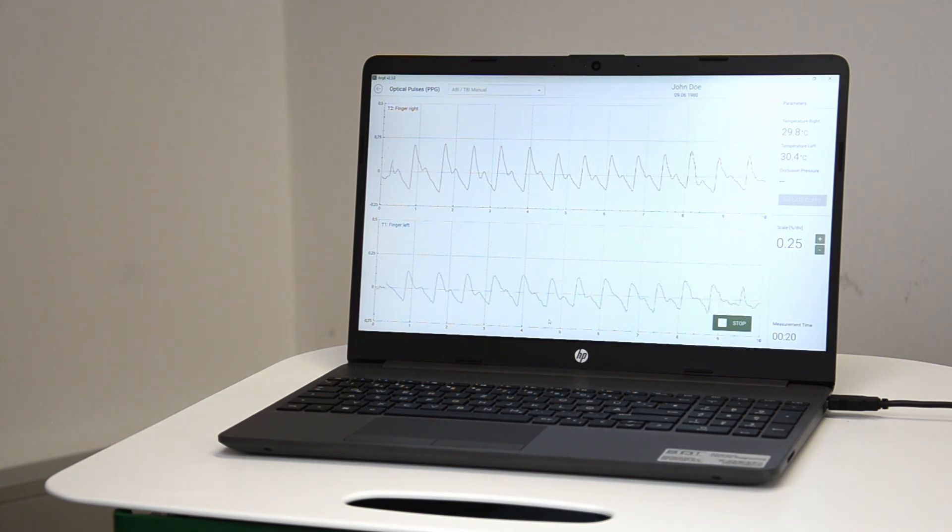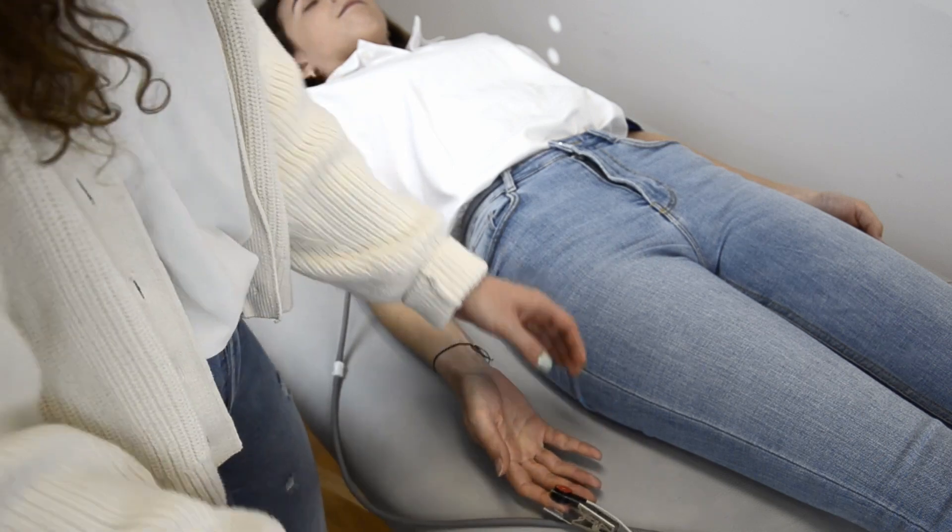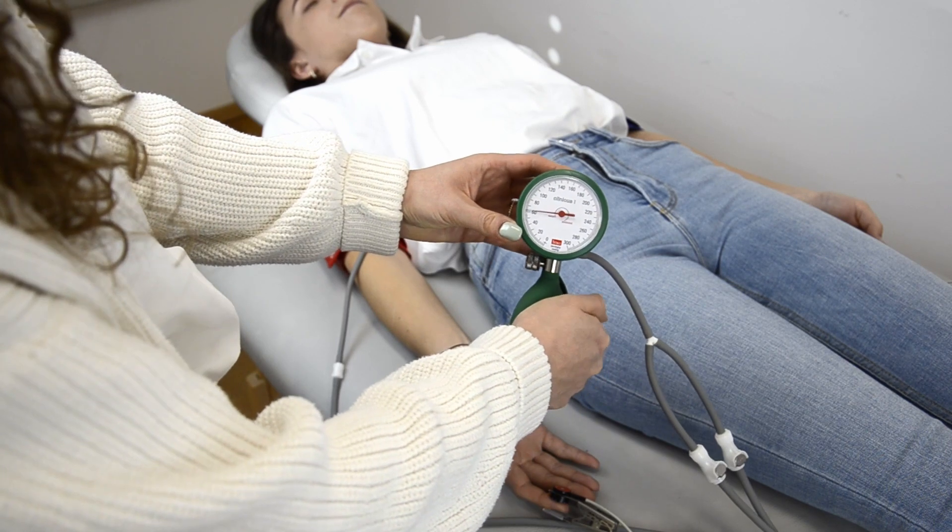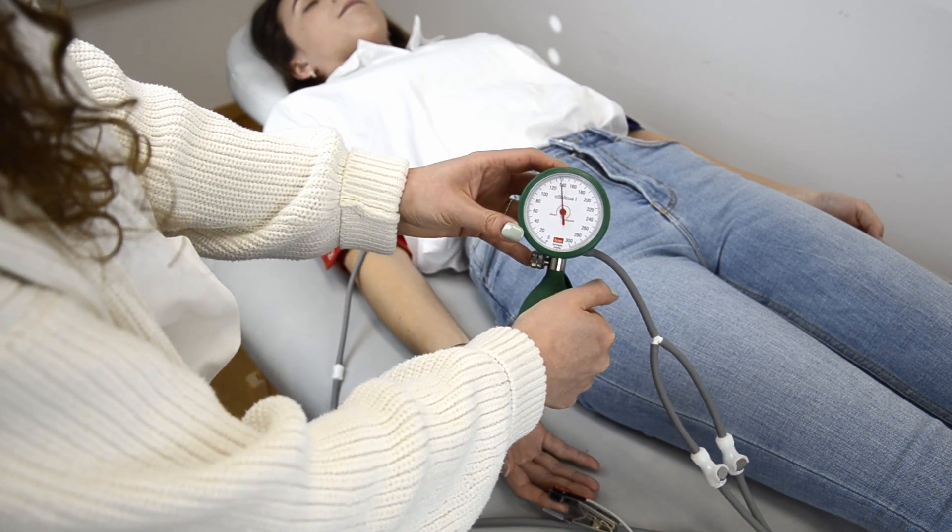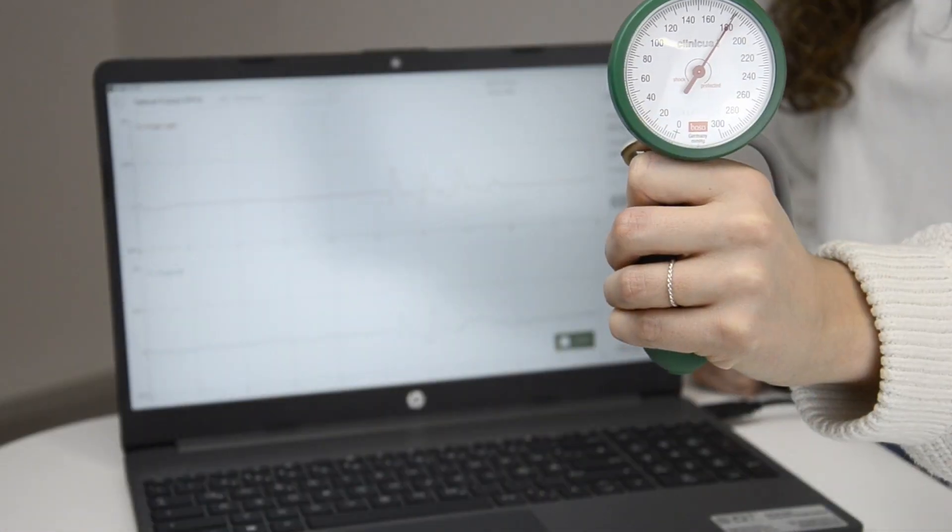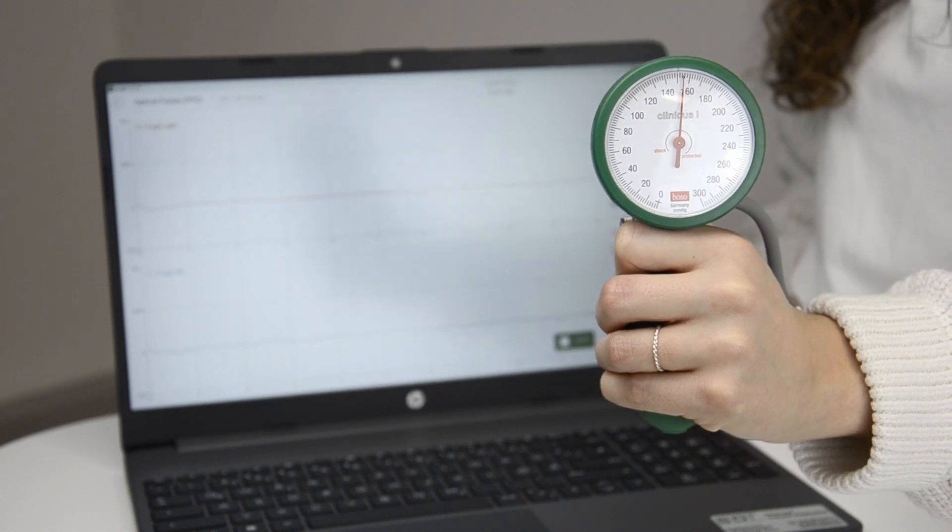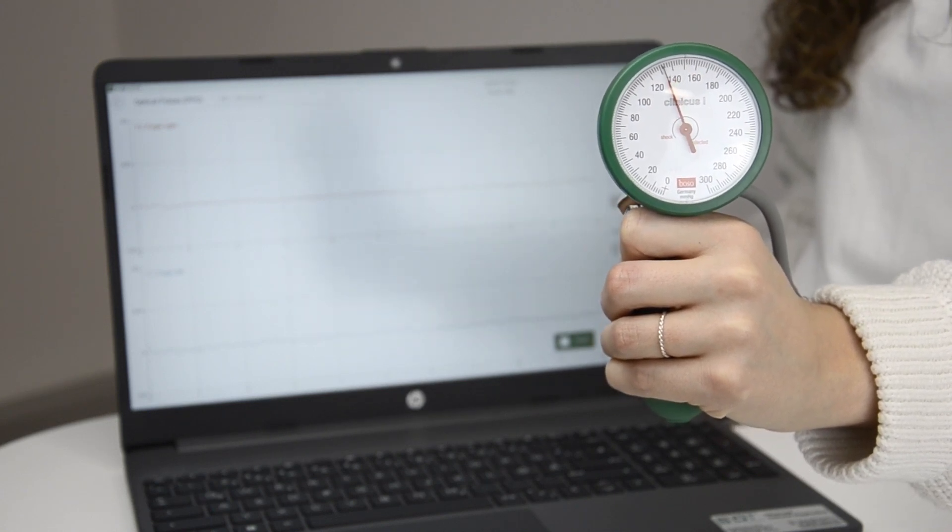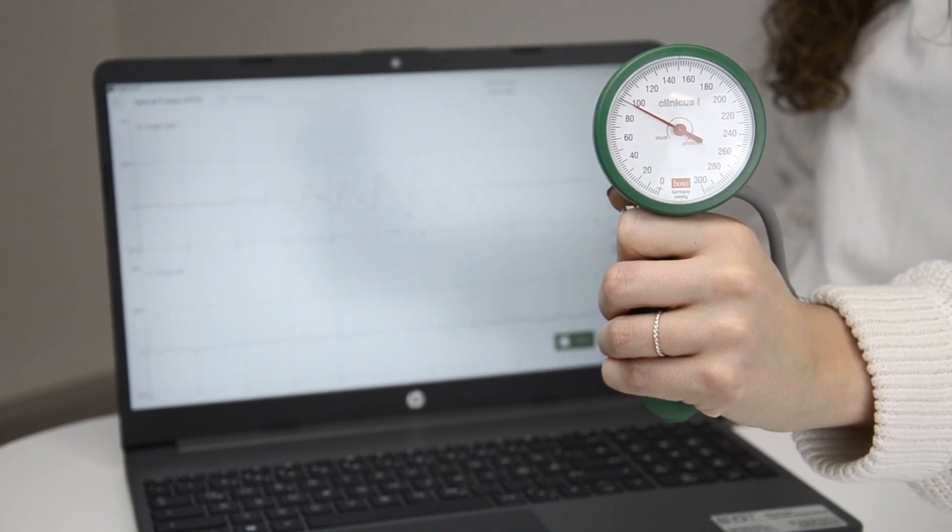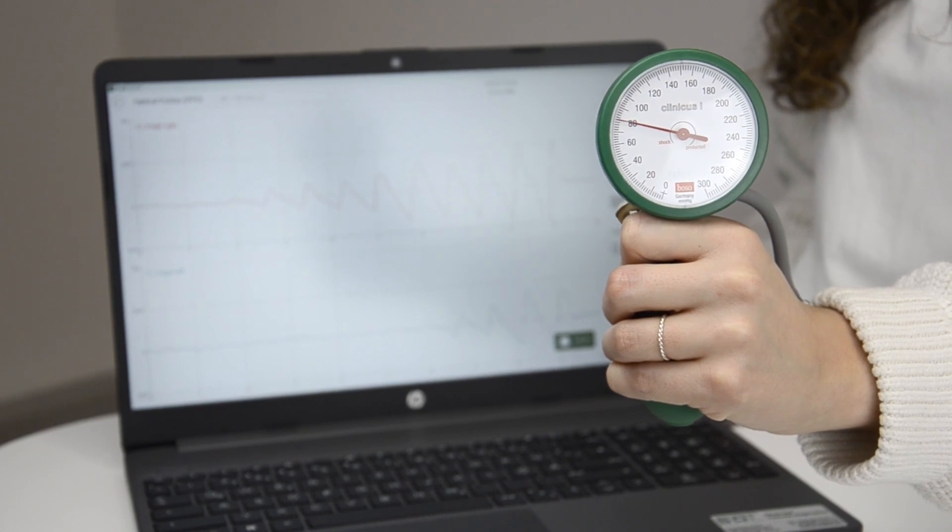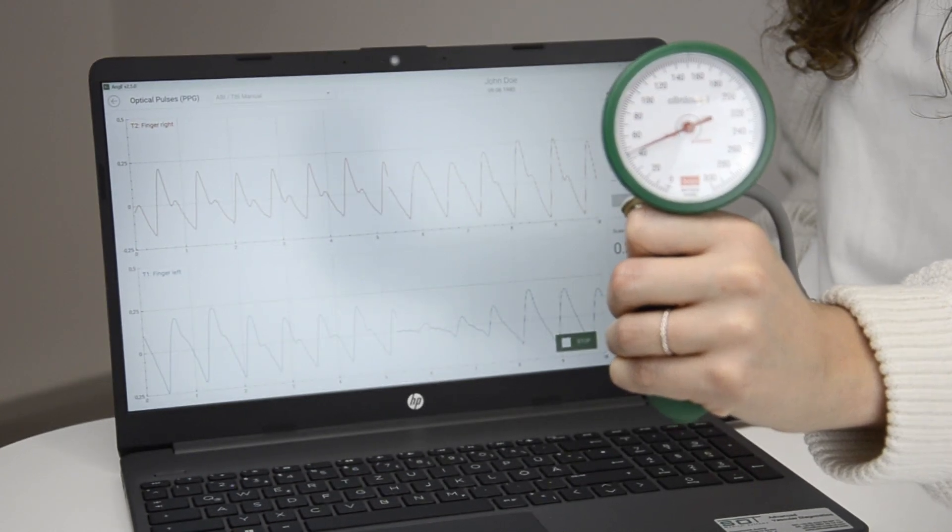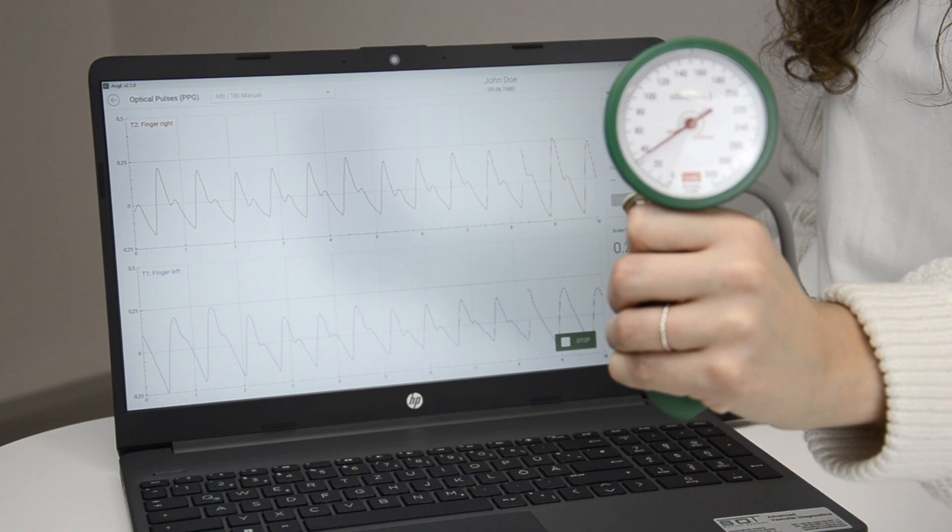Now you can start to apply the cuff pressure. Apply pressure in the cuffs using the hand pump. Increase the cuff pressure until the pulse waves disappear and the flat line is displayed. Release the cuff pressure slowly. Observe the manometer and note the pressure at which the first pulse waves reappear. If you are unsure about the recorded pressure, simply pump the cuff up again and release slowly to recheck the result. The pressures have to be noted for the left and right side individually.